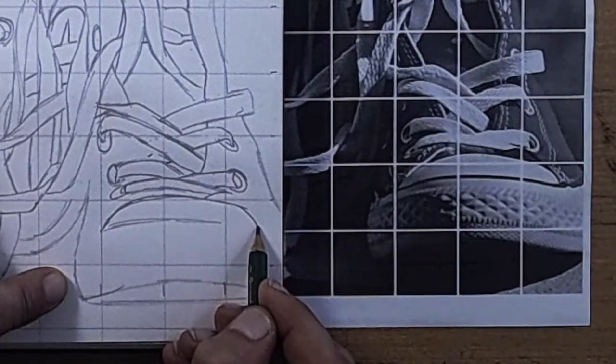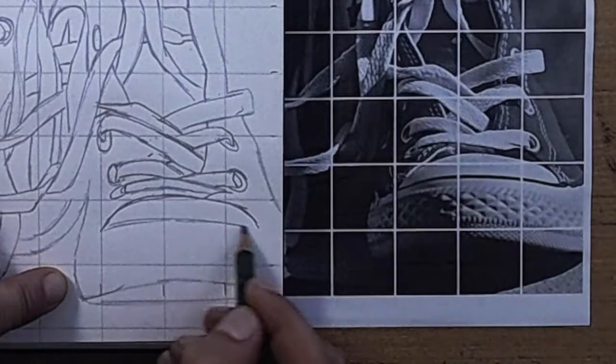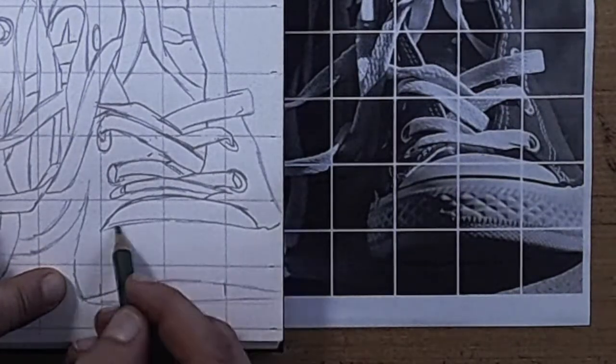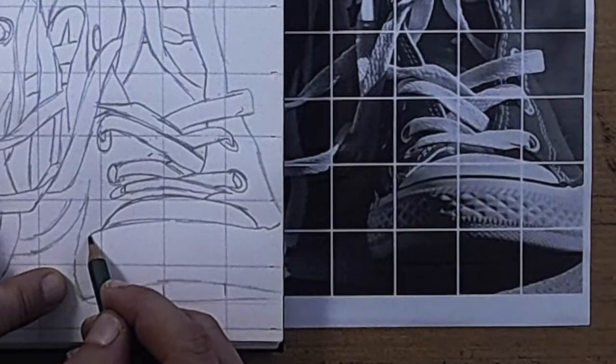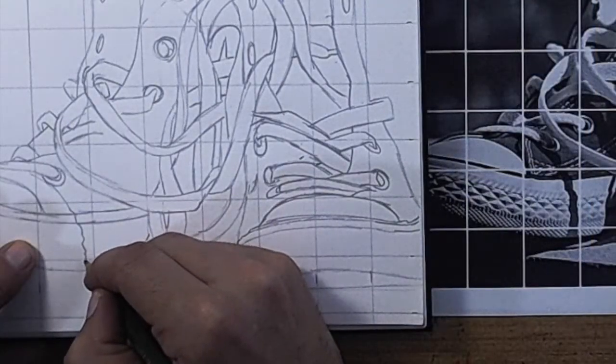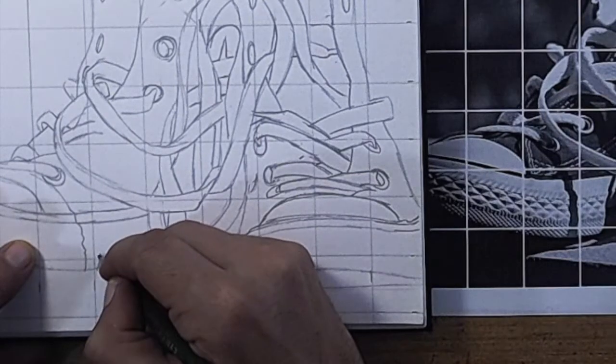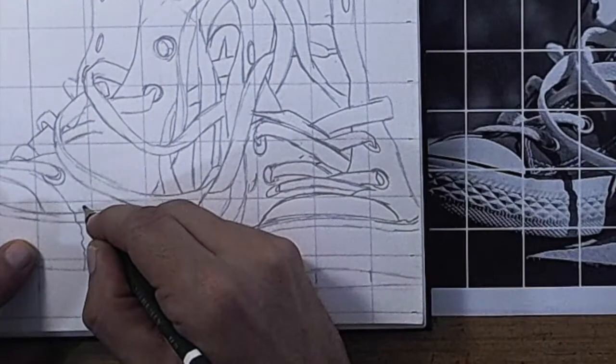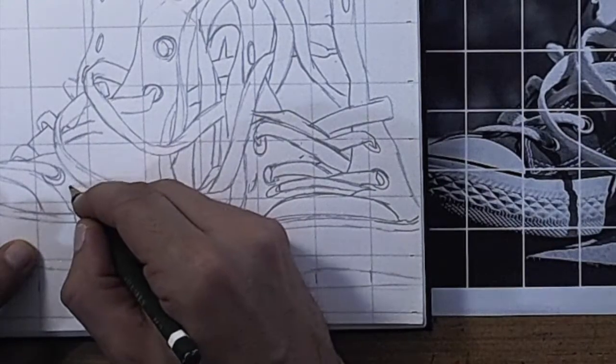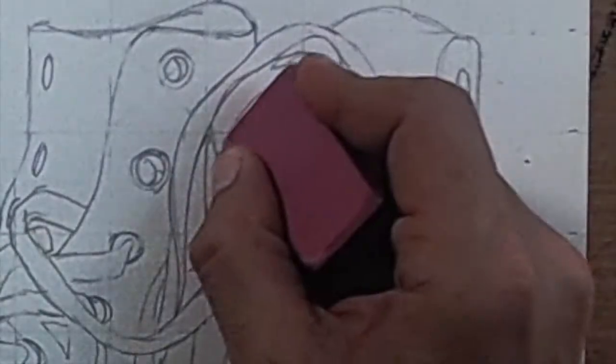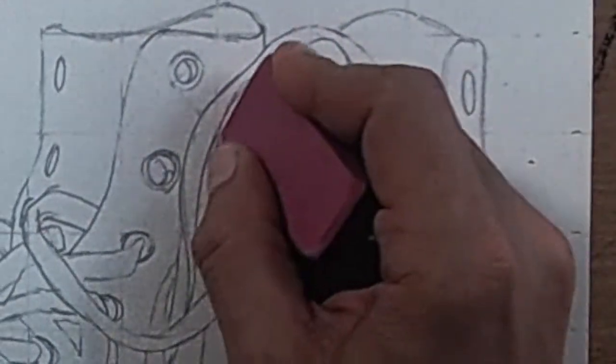Alright, we're closing in on the end of this contour line drawing using the grid technique. I do want to include some of the shadows. It's a strongly lit subject and the shoestrings are casting some bumpy or wavy little shadows across the shoes. Those are such hard edge shadows, I think it would be a good idea to go ahead and draw those in.